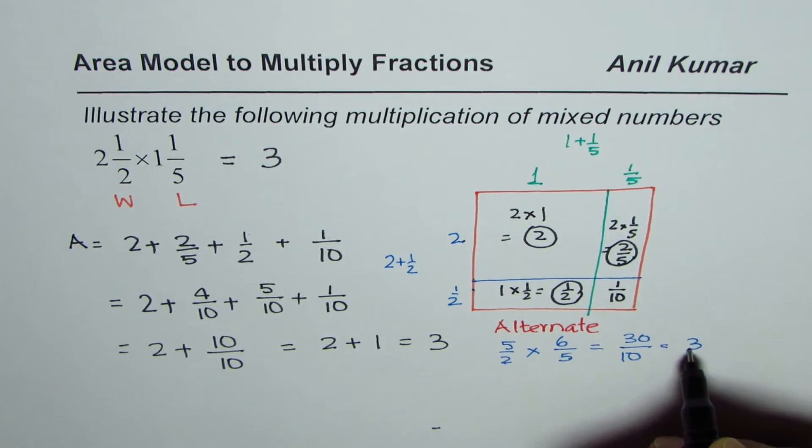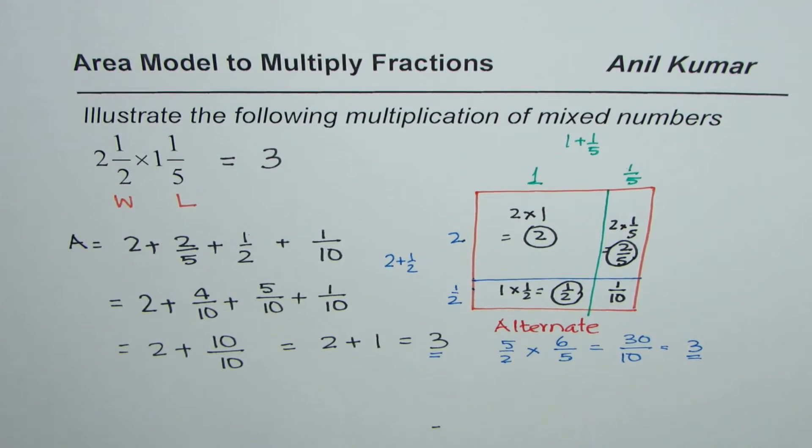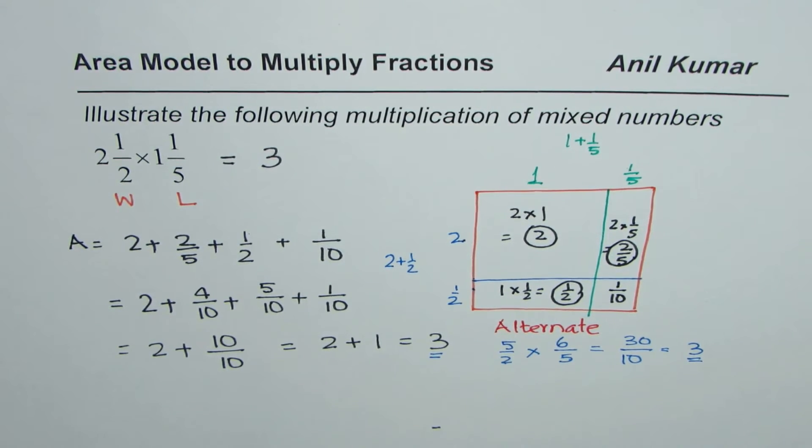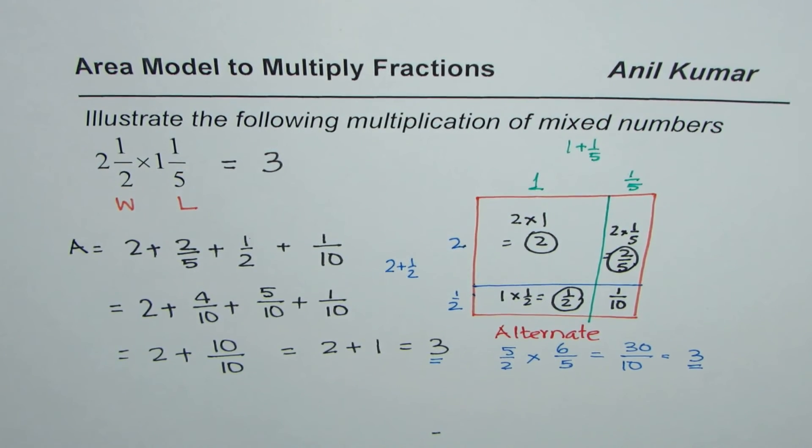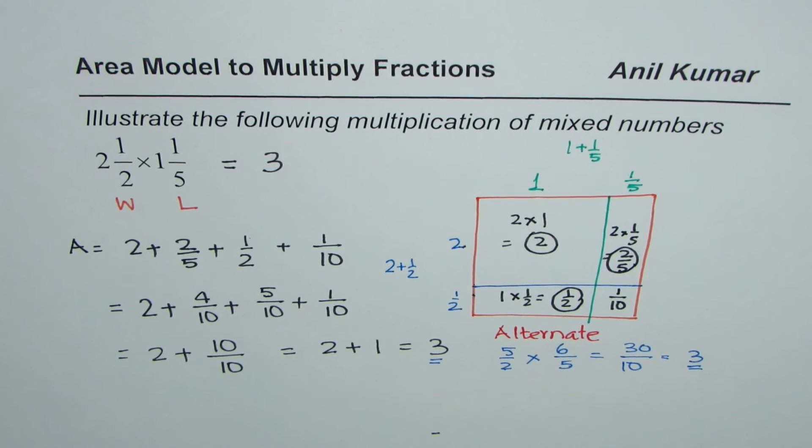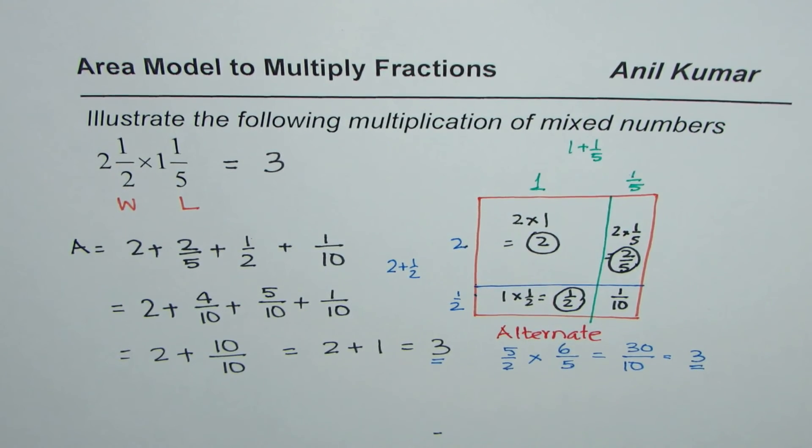30 divided by 10 is 3, so we get exactly the same answer. I hope you understand the area model and how to add smaller areas of rectangles to get the whole area. I'm Anil Kumar and I hope this helps you understand the basic concept of finding product of fractions using area model. Thank you and all the best.